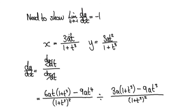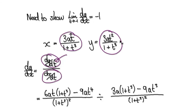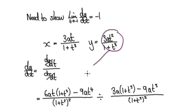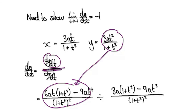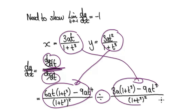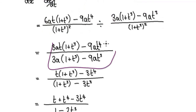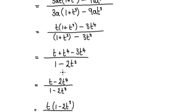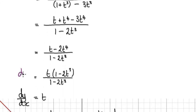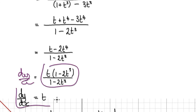To work out dy by dx, we differentiate y with respect to t and dx with respect to t. Differentiating y using the quotient rule gives us this, and differentiating x using the quotient rule gives us this. Tidying up gives dy by dx as this expression, which simplifies further to this.